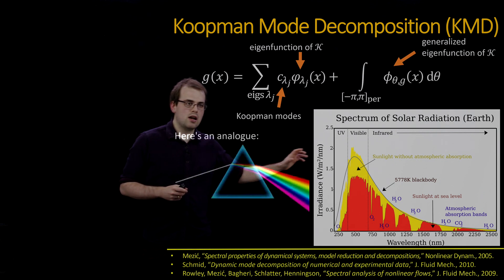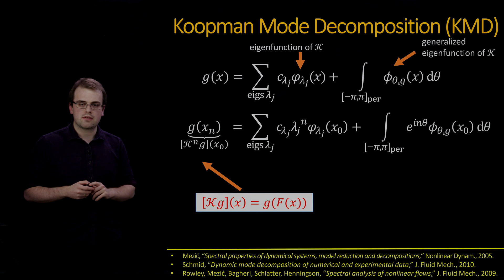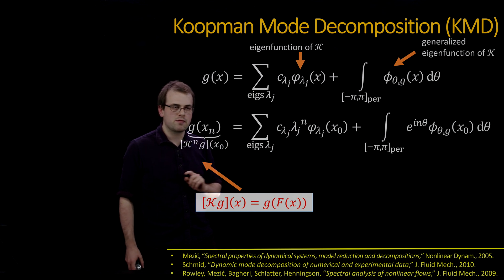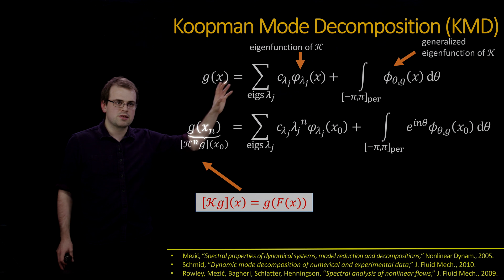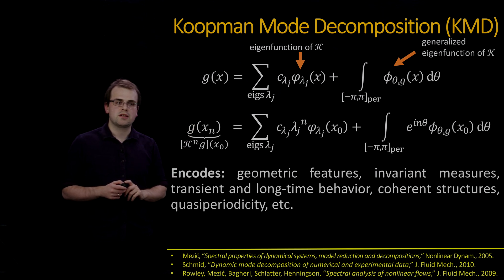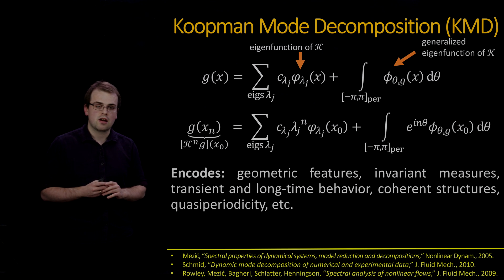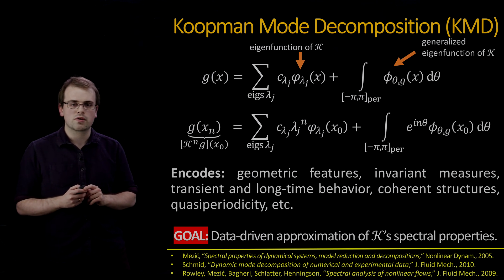Similarly, looking at intensity in different wavelengths of solar radiation allows you to deduce the chemical composition of the sun. If you want to evaluate g at time n, this is the same as applying the Koopman operator n times to g. For eigenfunctions, you get the power of the eigenvalue; for the continuous spectrum, a Fourier integral. More generally, the spectral information of the Koopman operator encodes geometric features, invariant measures, transient and long-time behavior, coherent structures, quasi-periodicity, and more. Our goal becomes data-driven approximation of the spectral properties of K.